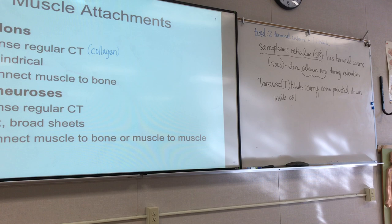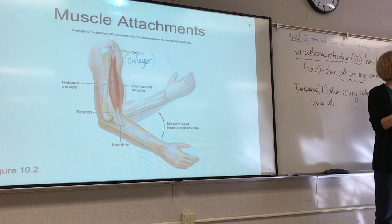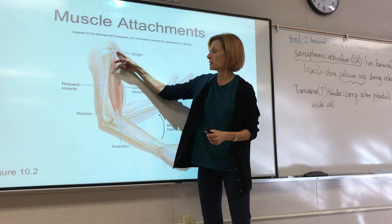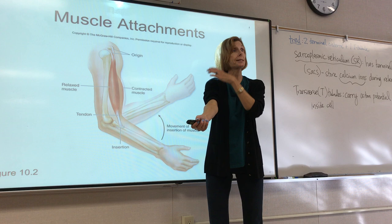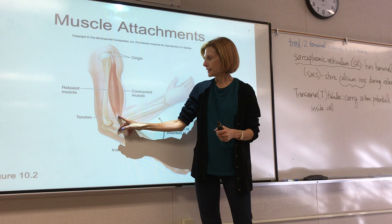Most muscles are attached to bone by a tendon. If you've heard the terms origin and insertion, these are the two muscle attachments. This diagram uses the biceps brachii muscle — a superficial muscle in the anterior arm — as an example. You can see where these two attachments come way up on the scapula, and then the muscle comes down and inserts on the radius.